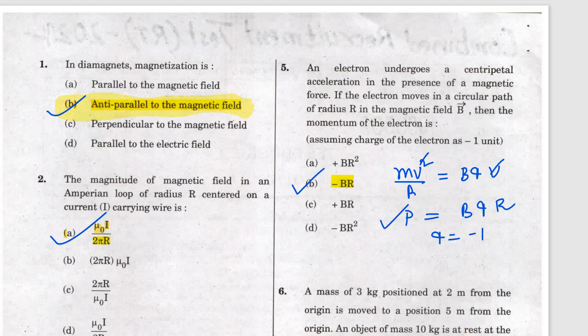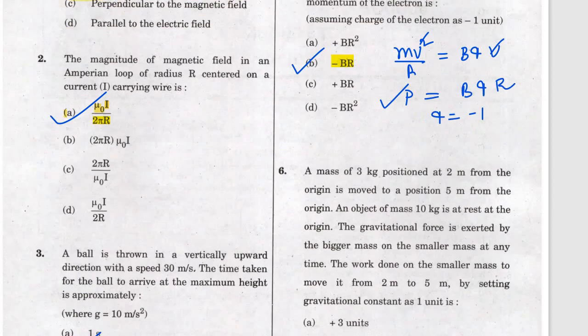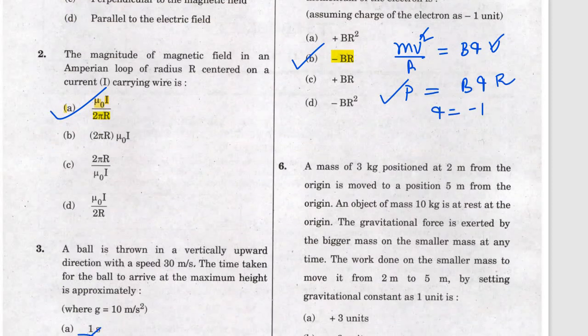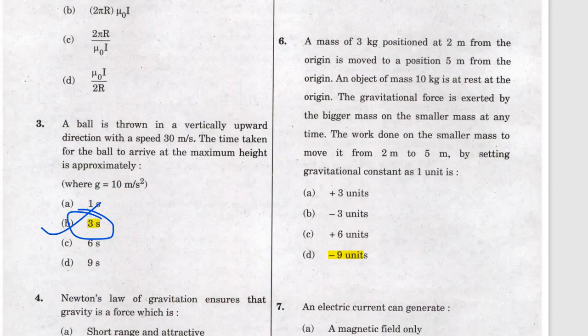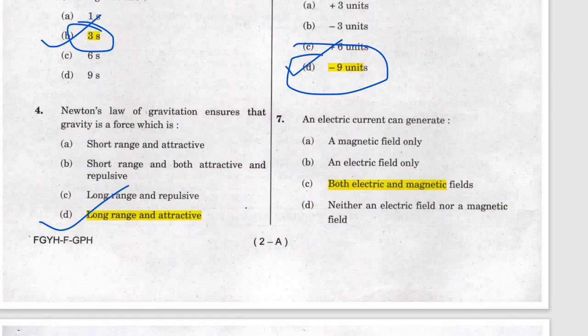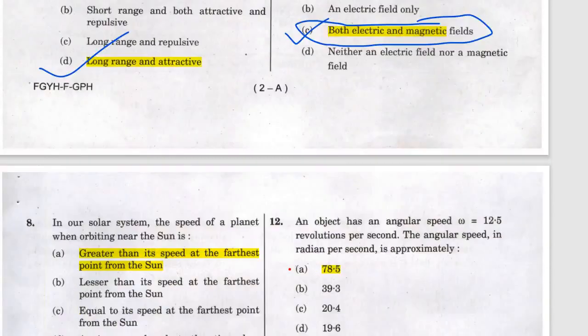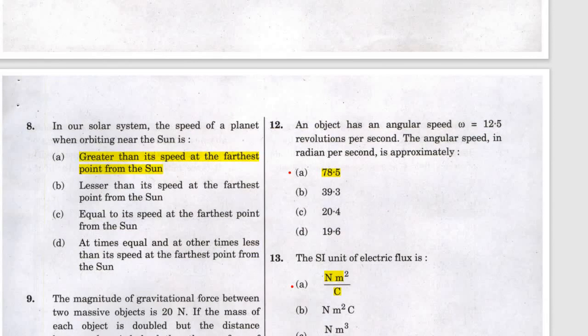Since q equals minus one, the answer will be b. I am just giving you the answers — detailed discussion would be quite lengthy. If you have any trouble or problem, comment and I will try to resolve it. Question six answer is d, minus nine units. Electric current can generate both electric field and magnetic field — from the Maxwell equation you can say that.